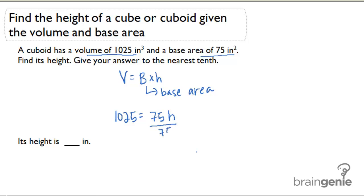So to solve for H we could just divide both sides by 75. When we do this we get H equals approximately 13.667. This is, if you're thinking about fractions, 13 and 2 thirds.